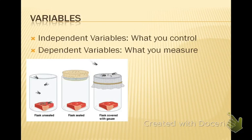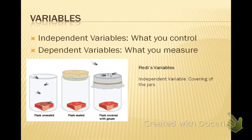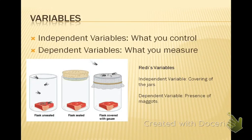There are two types of variables in an experiment. The independent variable is what you control — also called the manipulated variable. The dependent variable is what you measure — also called the responding variable. For this class we'll refer to them as independent and dependent. Redi's independent variable was covering the jars. He sealed one jar completely and put cheesecloth on a second jar, which has tiny holes that let air in but not flies. His dependent variable was the presence of maggots — if his hypothesis was true, he shouldn't see maggots in his two covered jars.